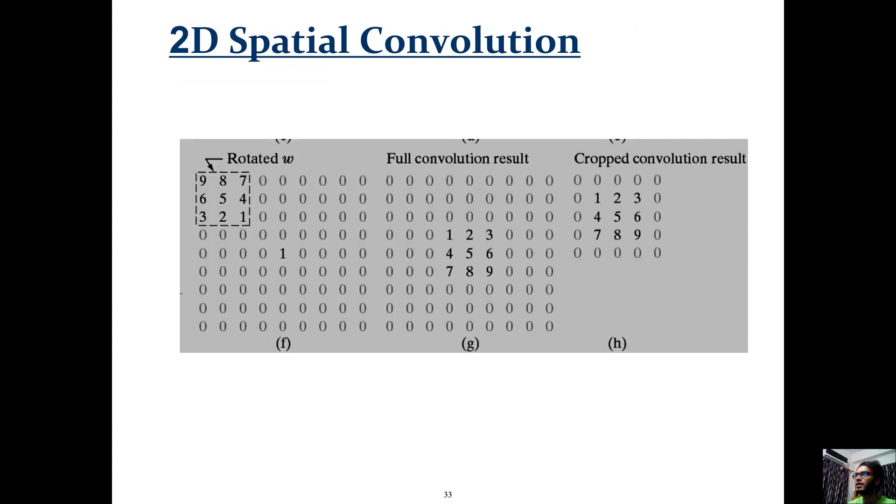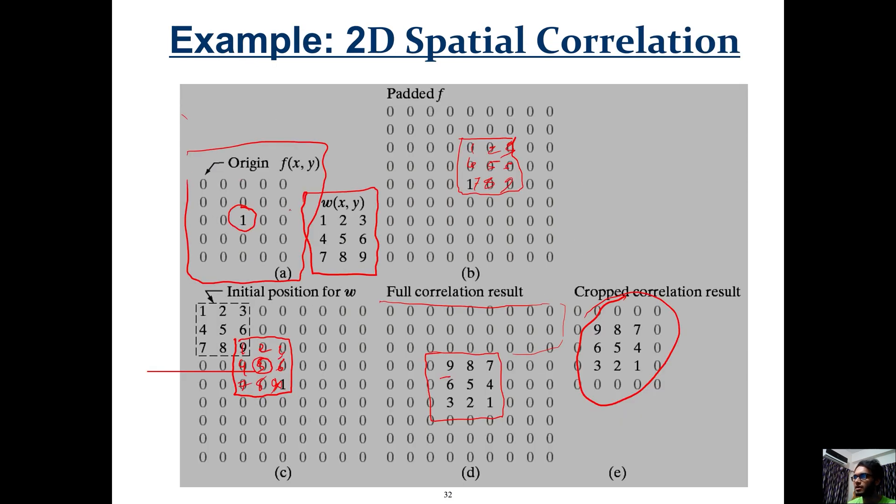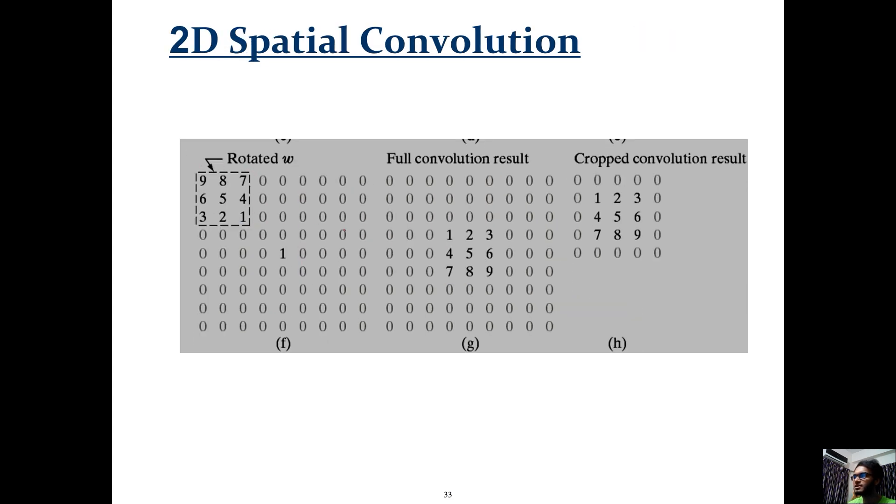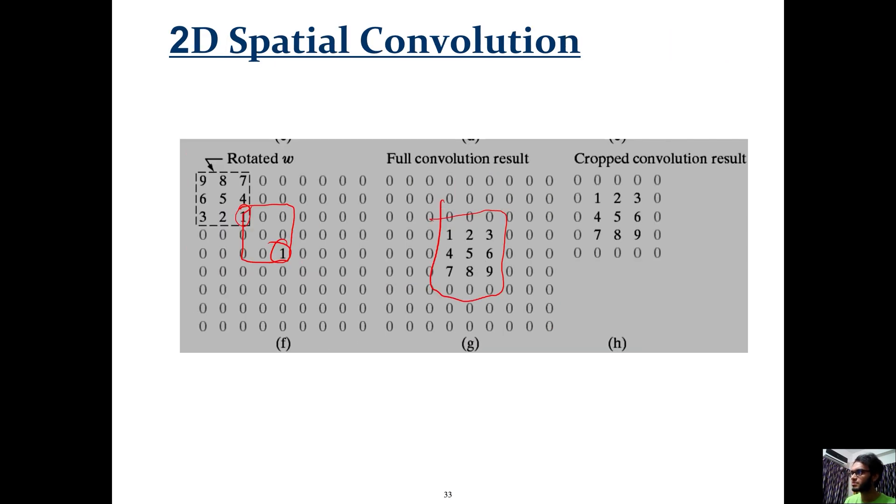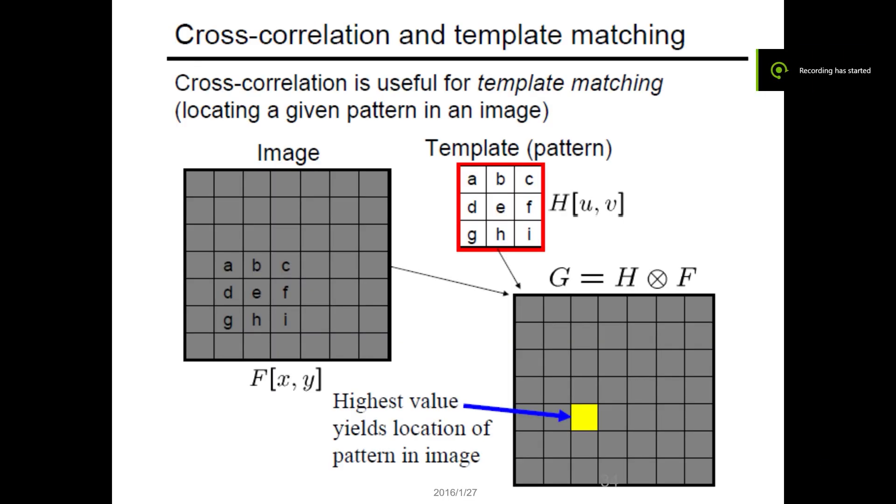When we do convolution, we flip the values - so nine becomes one, eight becomes two, seven becomes three. This produces the convolution result. For this symmetric case, correlation and convolution give similar results because the filter is symmetric.